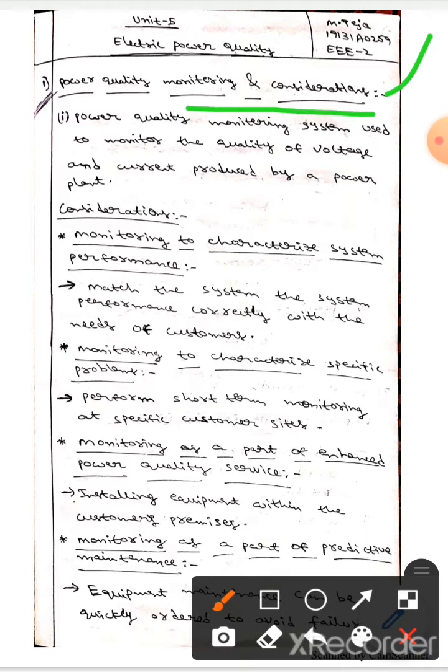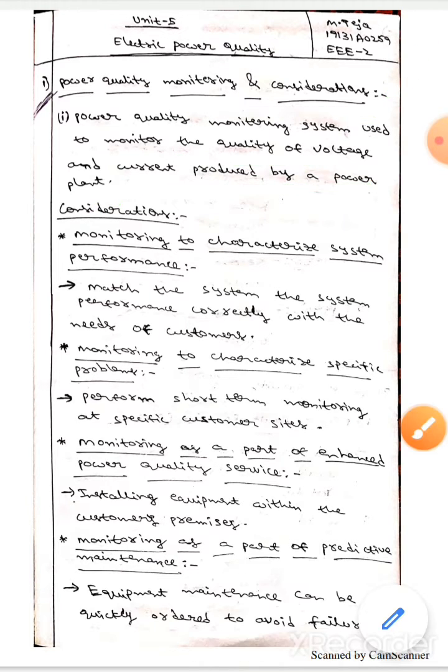Power quality monitoring is used to monitor the quality of voltage and current produced by a power plant. Let's talk about the considerations.